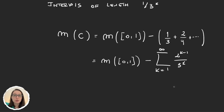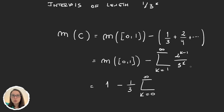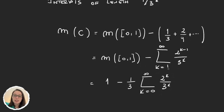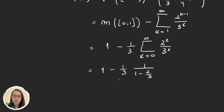The measure of [0,1] gives us one. For the sum, I factor out one-third and reindex from k equals zero to get the sum of (2/3)^k. This is a geometric series with ratio 2/3, giving 1 divided by (1 minus 2/3), which equals 3. So we have one-third times three equals one, and therefore one minus one equals zero. The Cantor set has Lebesgue measure zero.